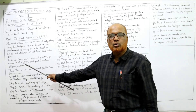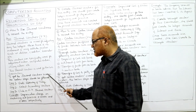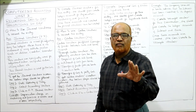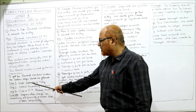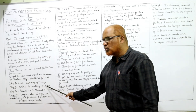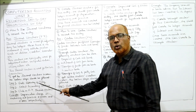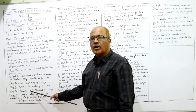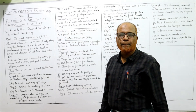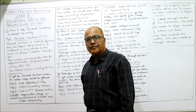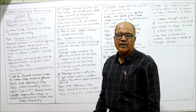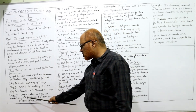To open the journal voucher screen, follow these steps. Step one: go to Gateway of Tally. Step two: select Accounting Vouchers. Step three: click on F7 for journal voucher. So remember, F7 is the key for journal voucher. Example: depreciation charged on machinery is 25,000 rupees and on furniture is 8,000 rupees.